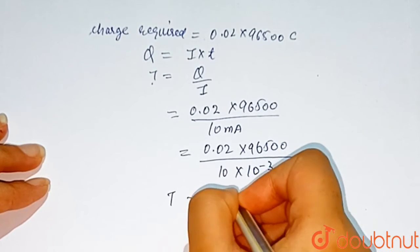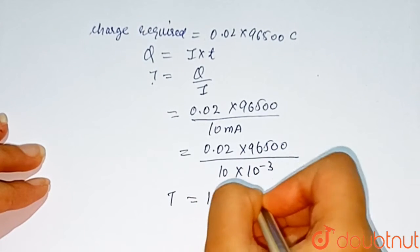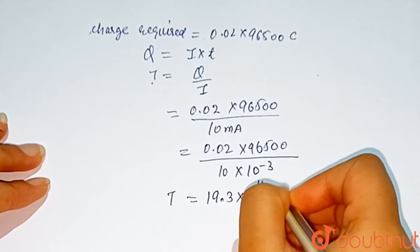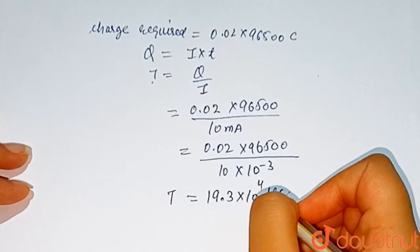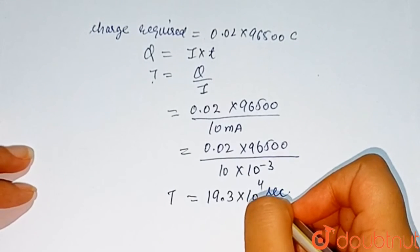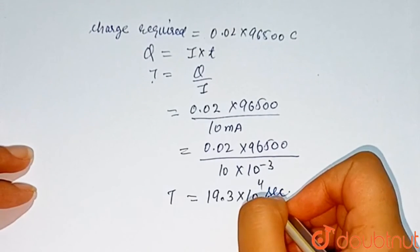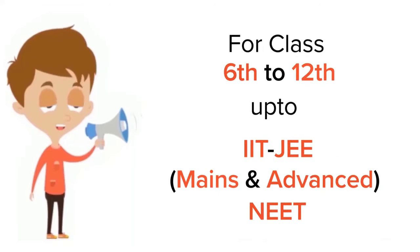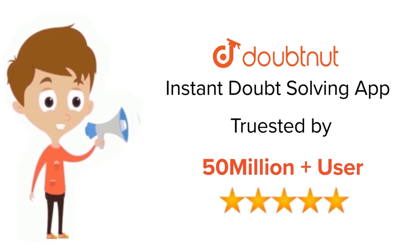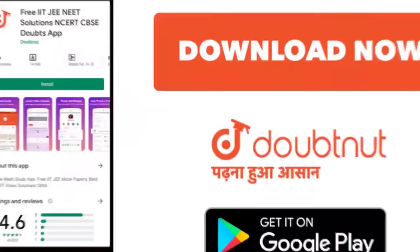On solving this, time is equal to 19.3 into 10 raised to power 4 seconds. So the time required is 19.3 into 10⁴ seconds. For class 6 to 12, IIT JEE, and NEET level, trusted by more than 5 crore students — download the DoubtNet app today.